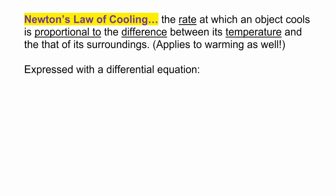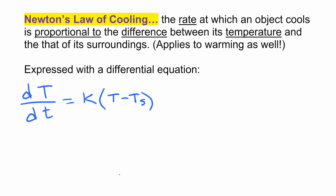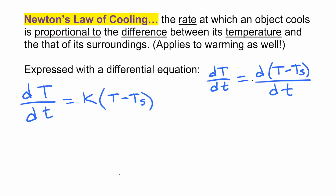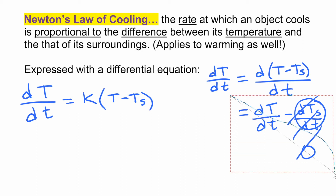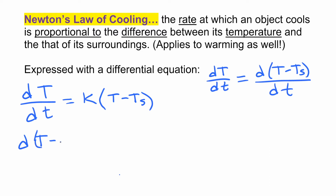If you express Newton's Law of Cooling as a differential equation, we have that the rate of change of temperature, dT/dt, is equal to some constant times the difference in temperature — temperature minus the temperature of the surroundings. We need to recognize that dT/dt is the same as d(T - Ts)/dt, because the derivative of the constant Ts is zero, leaving just dT/dt.